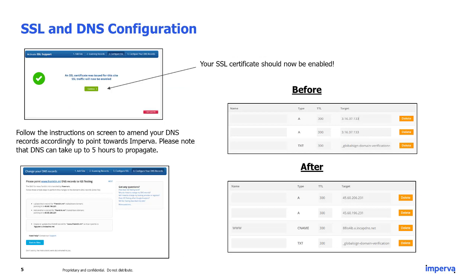Once the three-minute validation process has been completed, an SSL certificate should be issued for your website and SSL traffic will now be enabled. The next step is to configure your DNS records so that they are pointing towards Imperva. Please follow the instructions on the next screen to amend your DNS records accordingly.